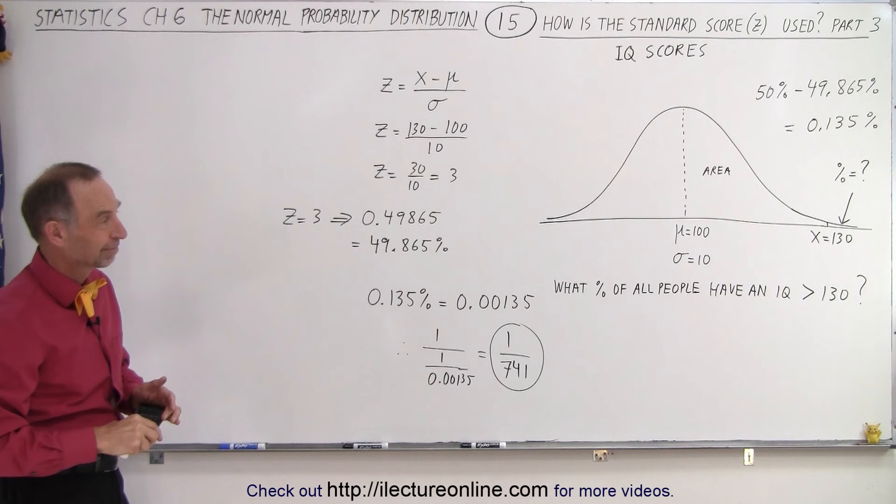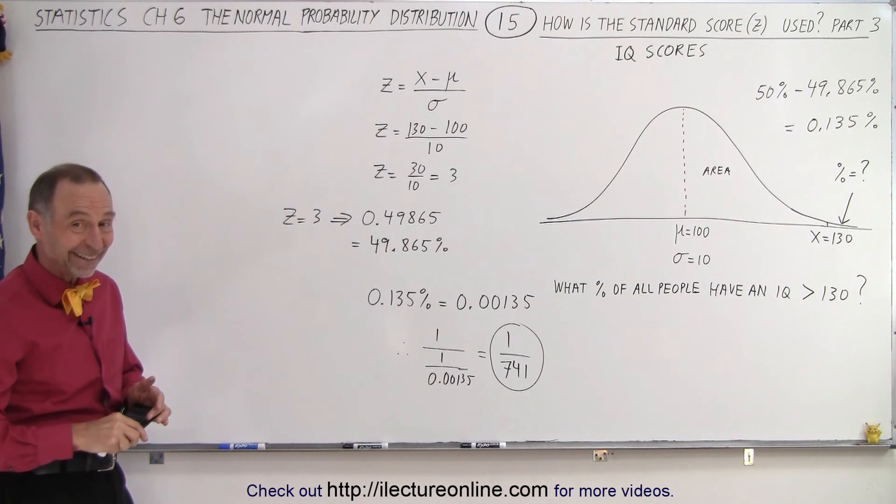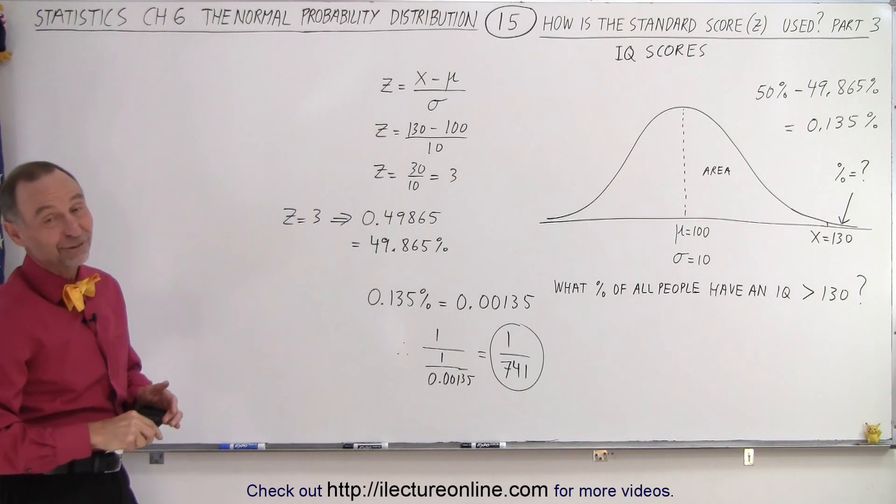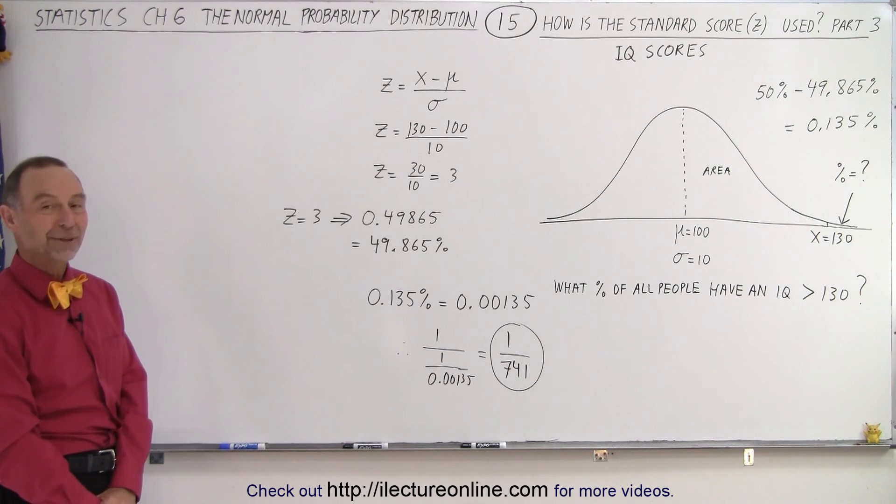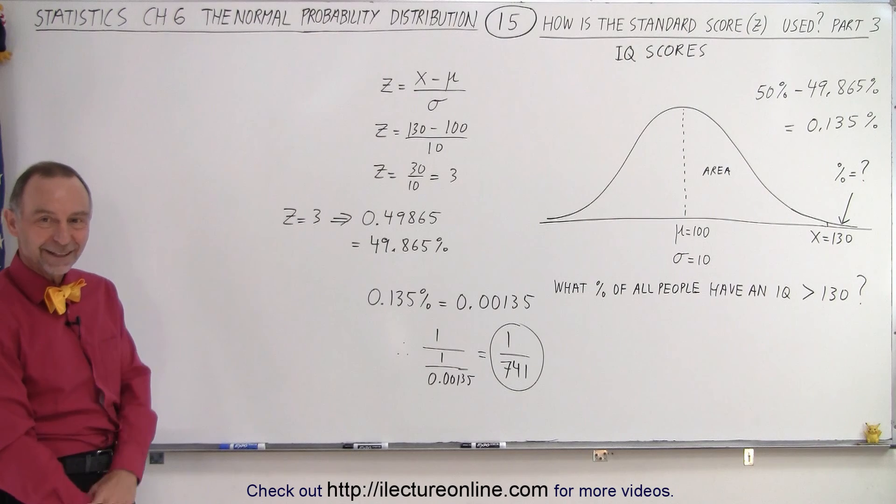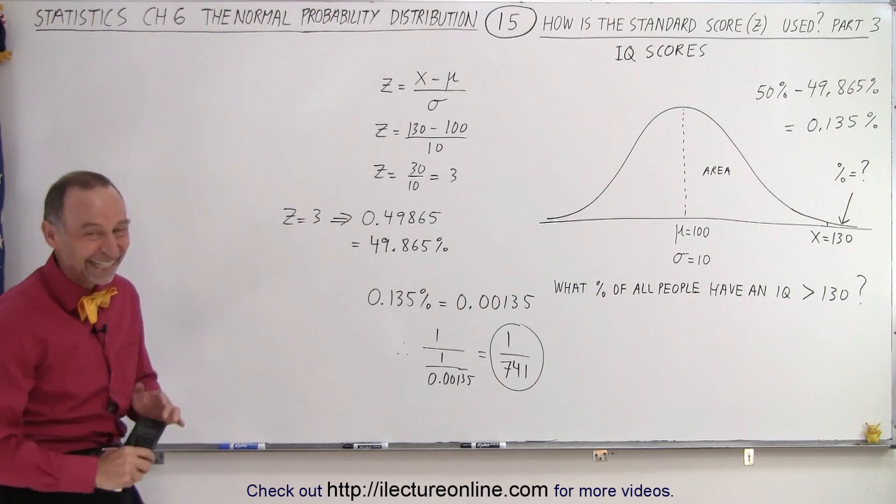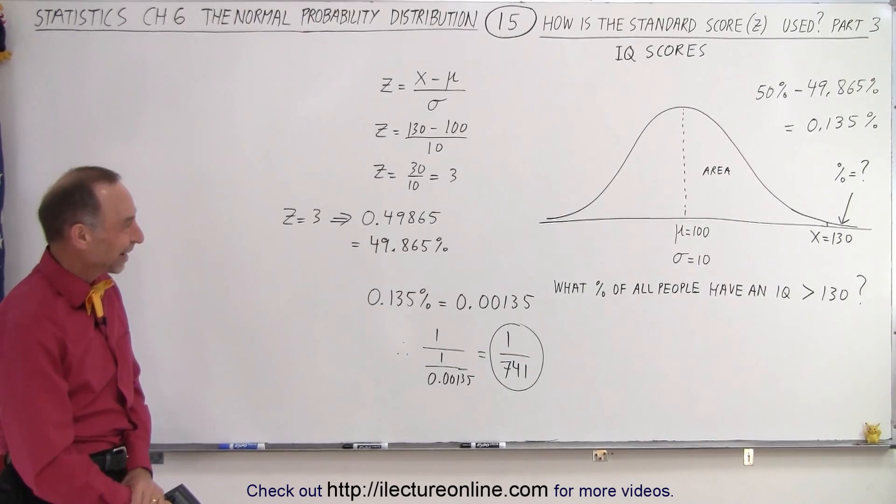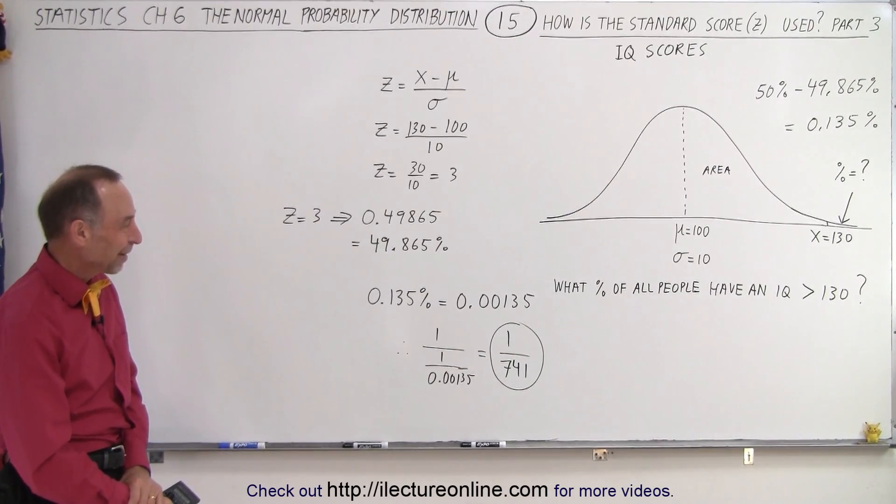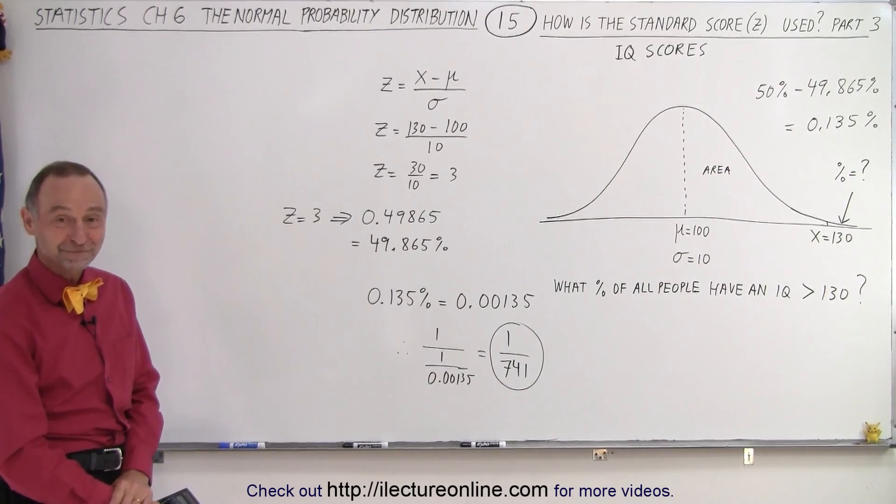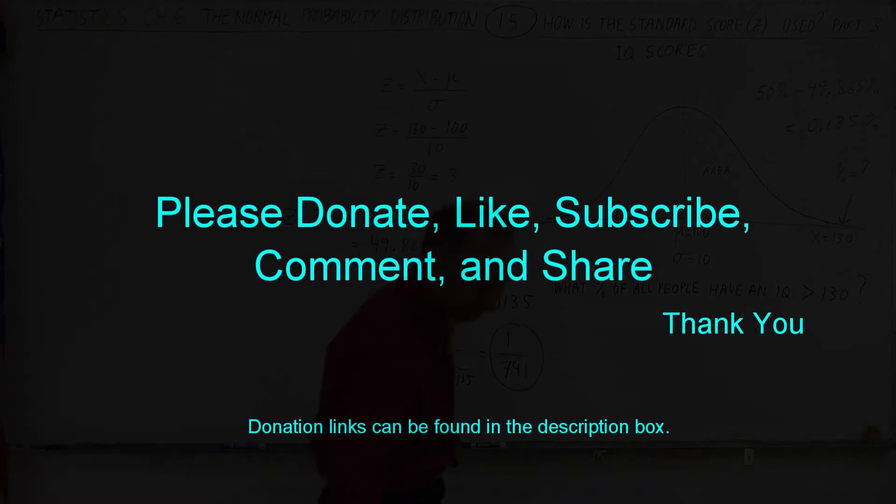They say Einstein's 160. Einstein was 160? Doesn't surprise me. Wow. So where does that put him? That's six standard deviations. Let's do that in the next video. Let's try to figure out where Einstein would fall. One out of how many are as smart as Einstein. That should be interesting. Thank you. Thank you.